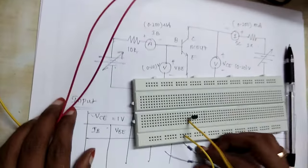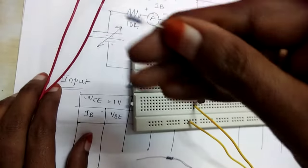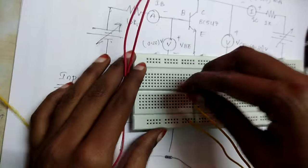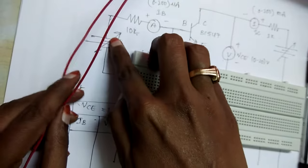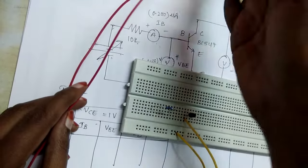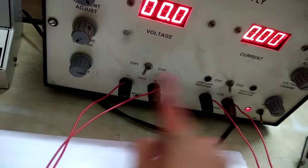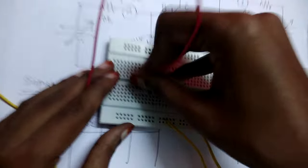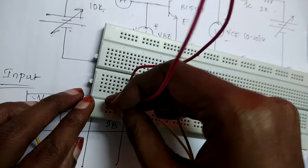Now we start the connections. On the input side, we have a 10K resistor — identified by the color code brown, black, black, red. RPS channel 1 positive is connected to one end of the 10K resistor, and channel 1 negative is connected to ground. We are using two channels of the RPS, both for voltage supply.